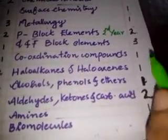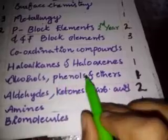Surface chemistry: one question. Metallurgy: one question. P-block elements second year: two questions. D and F block elements: three questions. Coordination compounds: one question. Haloalkanes and haloarenes: one question. Alcohols, phenols and ethers: one question. Aldehydes, ketones and carboxylic acids: two questions.